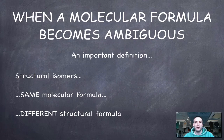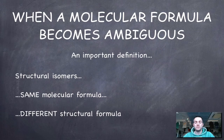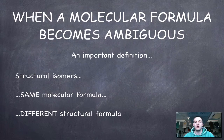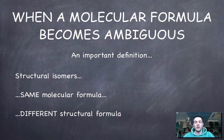Here's another definition. It is possible for a molecular formula to be ambiguous — not to tell us very much about the structure of a molecule. So when a molecular formula is ambiguous, this tells us that that molecule exists as things called structural isomers. Structural isomers are molecules that have the same molecular formula but different structural formulae. That's the definition of what structural isomers are — it's important to remember.